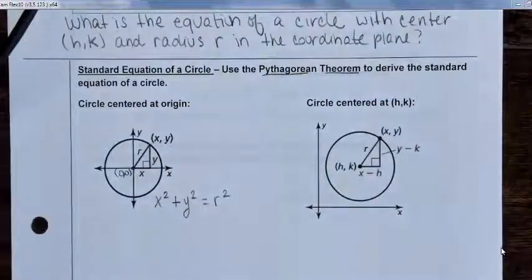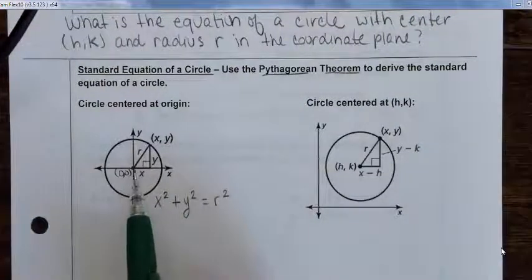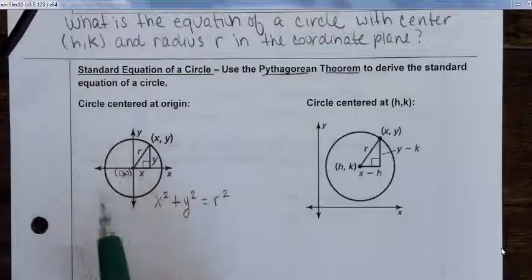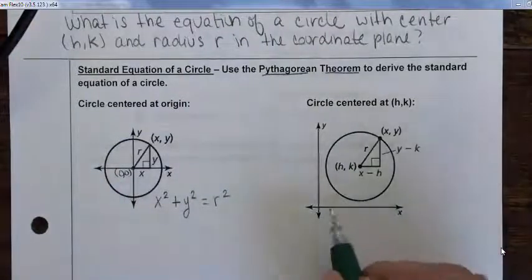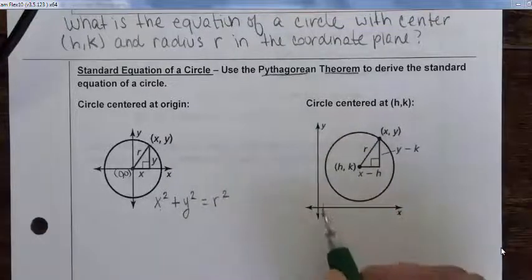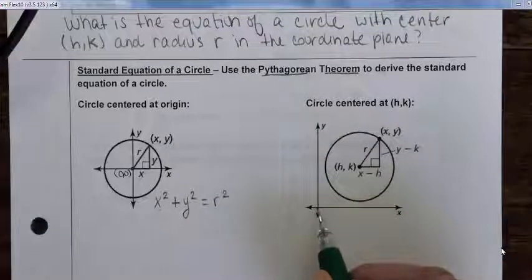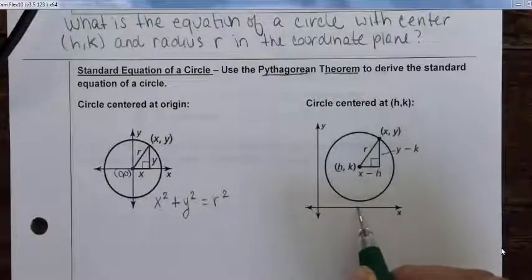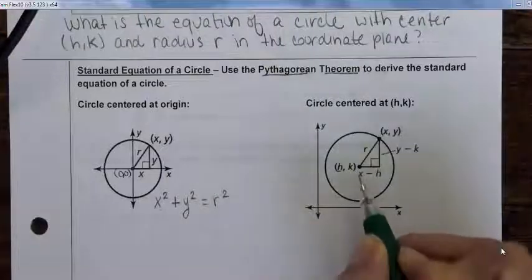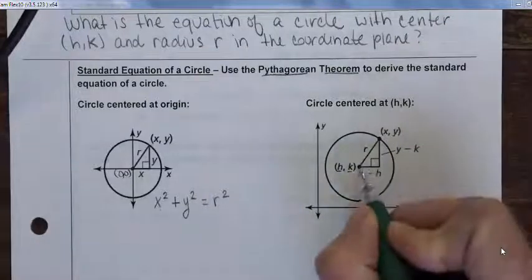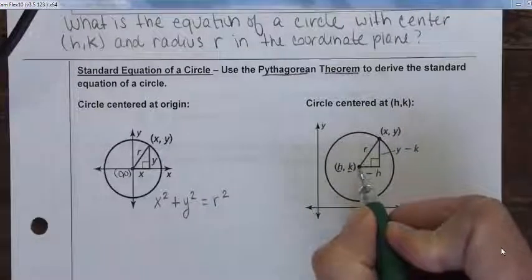Usually your circle is not going to be centered at the origin — it's going to have been translated somewhere else in the coordinate plane. This circle, if we think about the original one being at the origin, has been translated to the right h units — that's the x-coordinate — and up k units, the y-coordinate. That's where the center has been translated to.